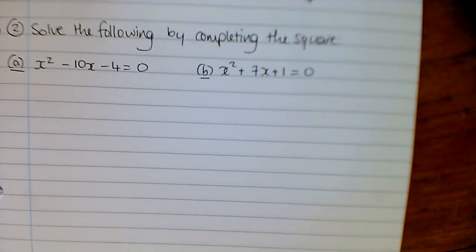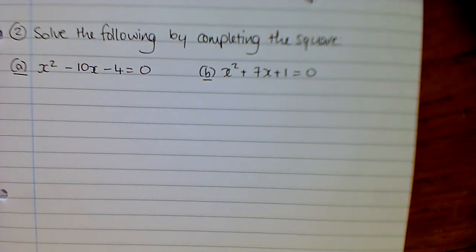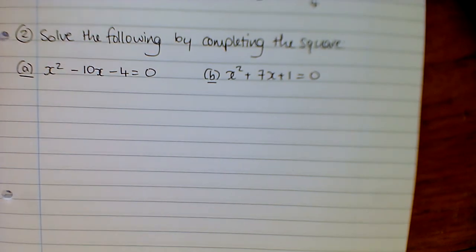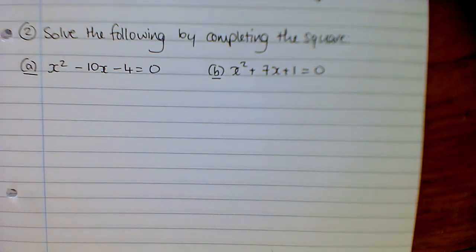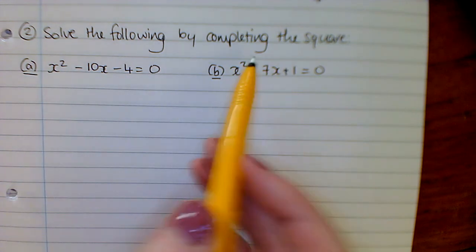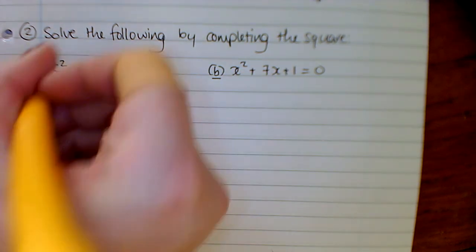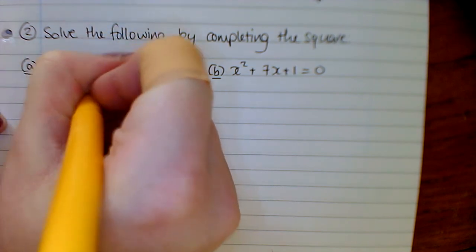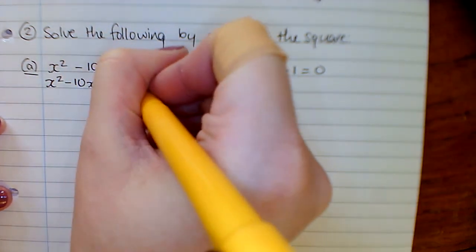Our second part is solving by completing the square. In an exam, if it says solve by completing the square and you solve it using the quadratic formula or by factorising, you will not get the mark. So if the question tells you to solve by completing the square, you have to use completing the square.